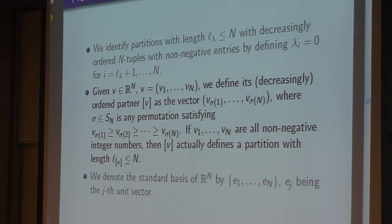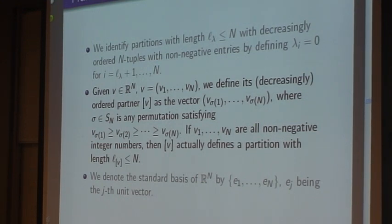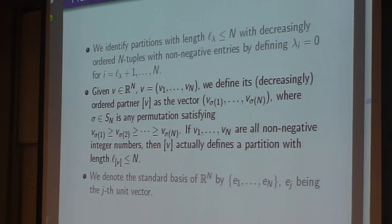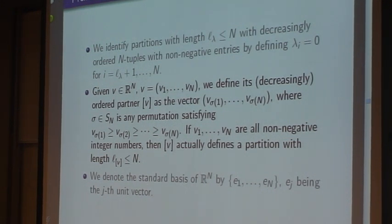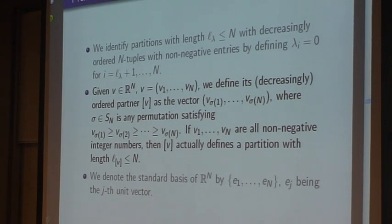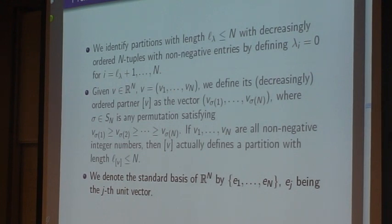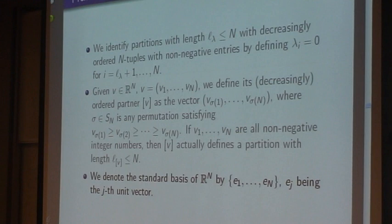If we have a vector in n-dimensional space, I will arrange this vector as a partition and denote it by bracket [V]. I denote the standard basis of R^n by e_1 to e_n.